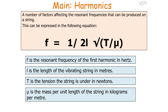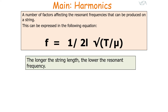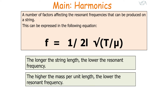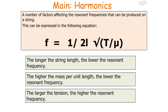From the equation f = 1/(2L) × √(T/μ), we can say the longer the string length, the lower the resonant frequency. The higher the mass per unit length, the lower the resonant frequency. And the larger the tension of the string, the higher the resonant frequency.